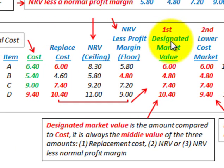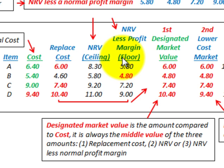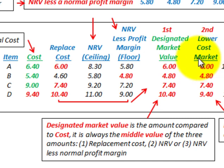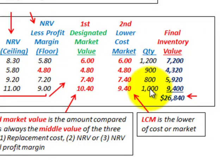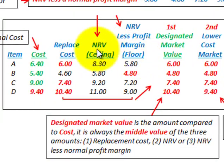To recap: first, determine the designated market value as the middle amount between the replacement cost, the ceiling (net realizable value), and the floor (NRV less normal profit margin) — identify the high, the low, and take the middle. Second, determine the lower of cost or market by comparing that designated market value to original cost and taking the lower. Finally, multiply the lower of cost or market per unit by quantity to get the final inventory value. You also need to calculate the ceiling and floor amounts from the given selling price, cost to complete, and normal profit margin.